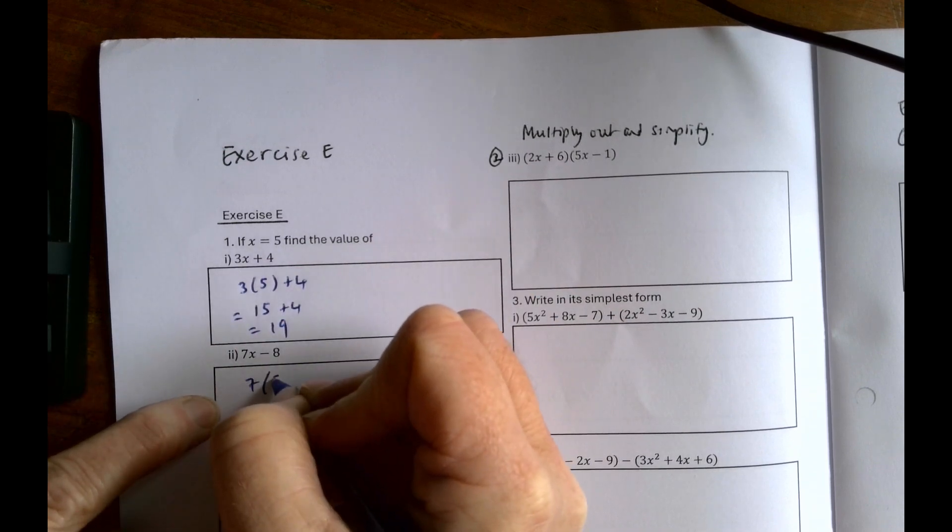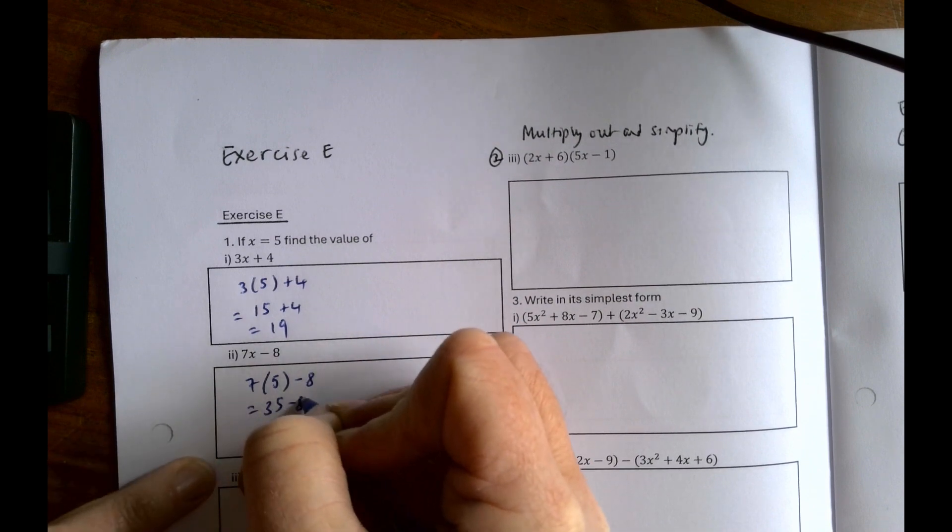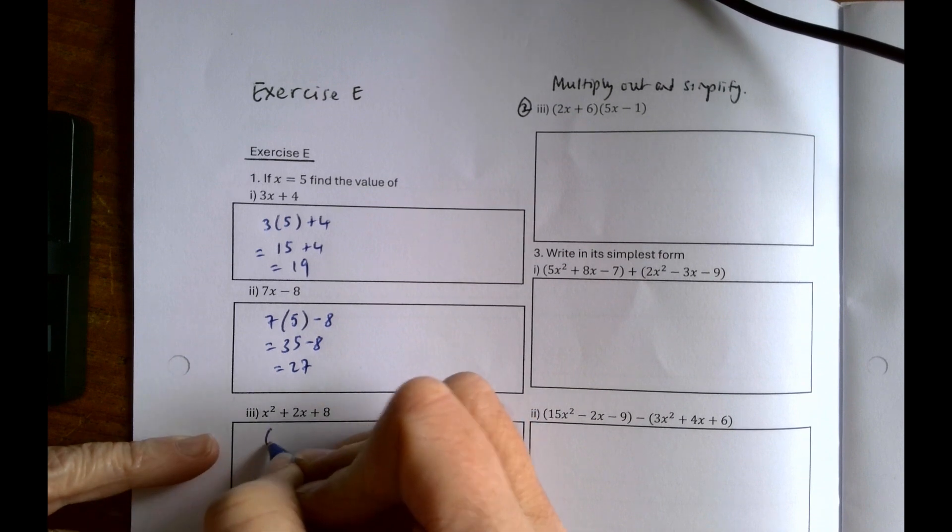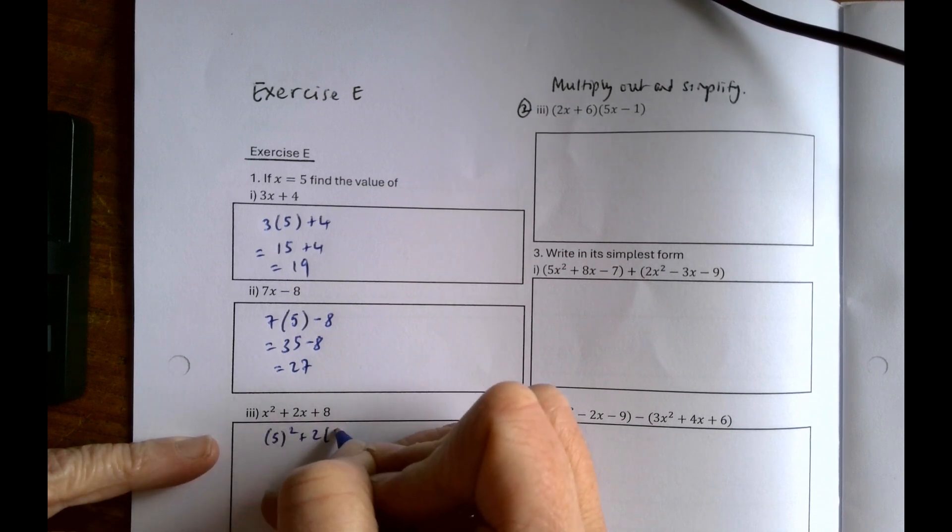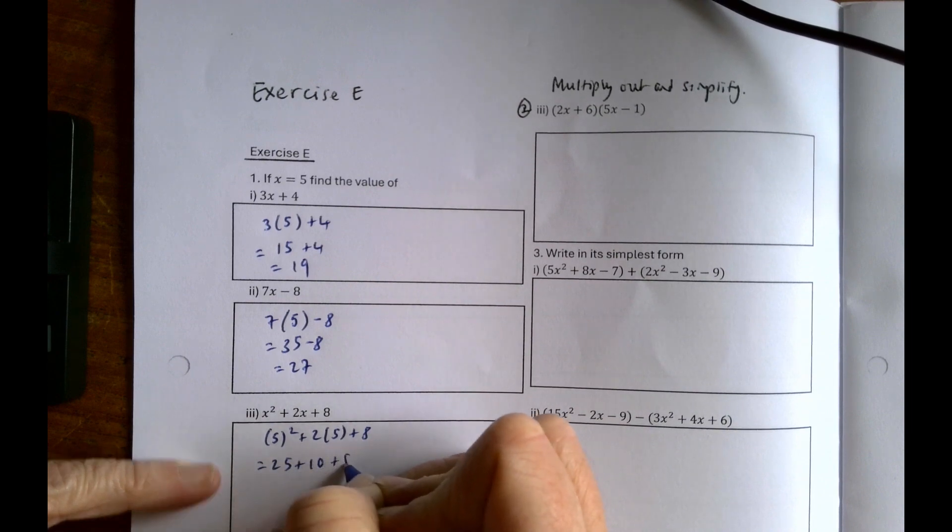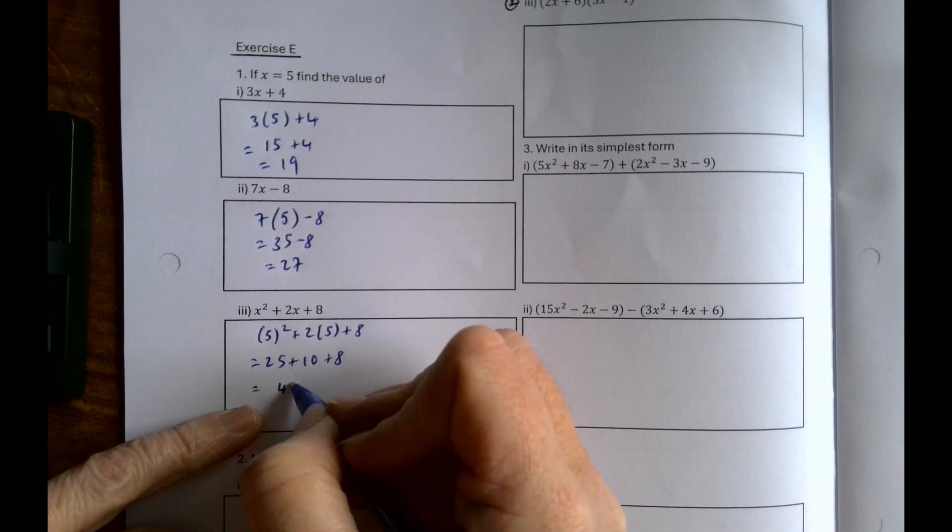7x minus 8, again we're subbing in 5 for x, so 7 by 5 is 35 minus 8 is 27. And then x squared plus 2x plus 8 is 5 squared plus 2 by 5 plus 8, which is 25 plus 10 plus 8, which is 41. Is it? No, 43.